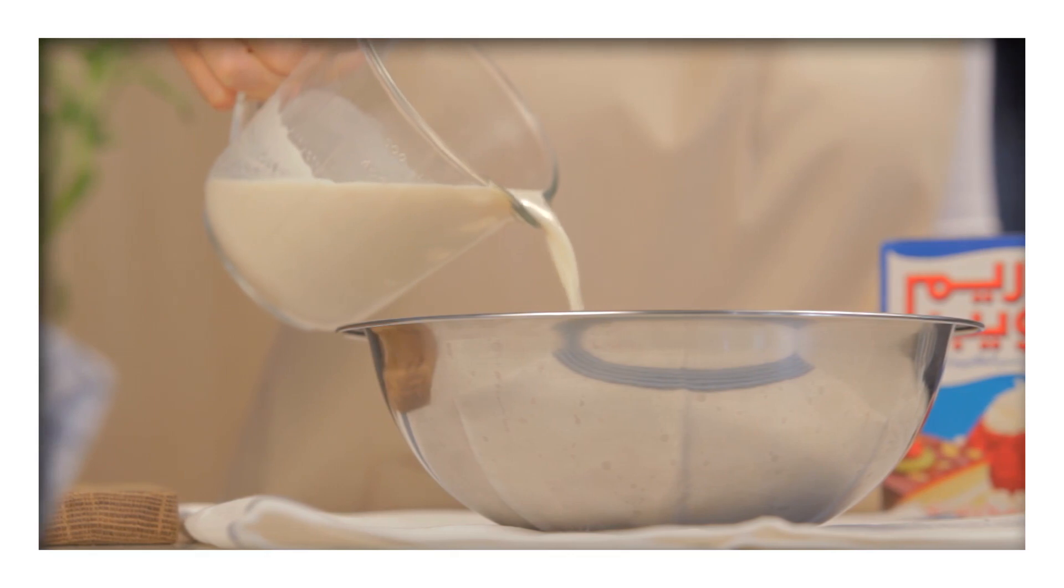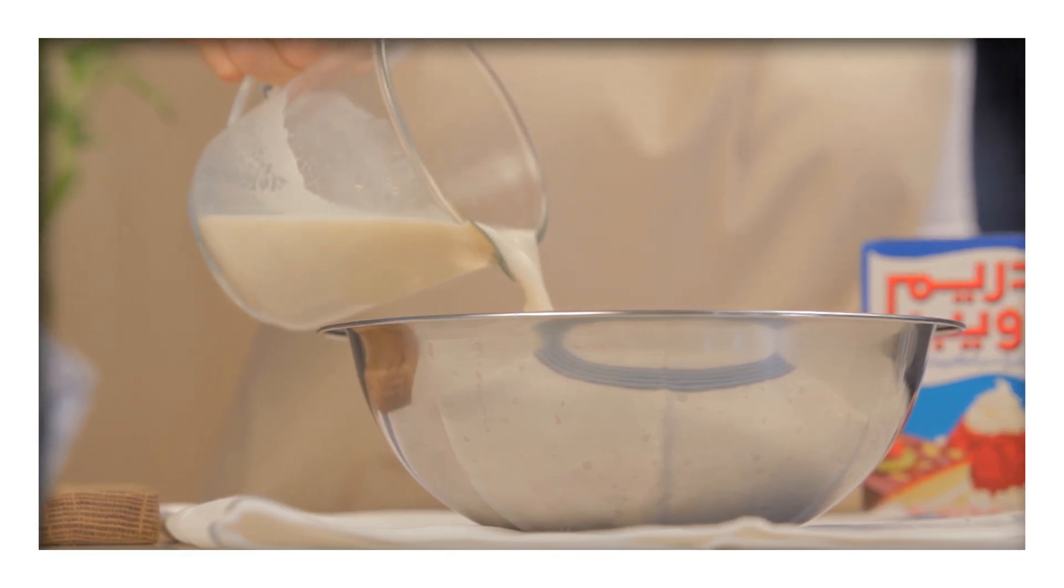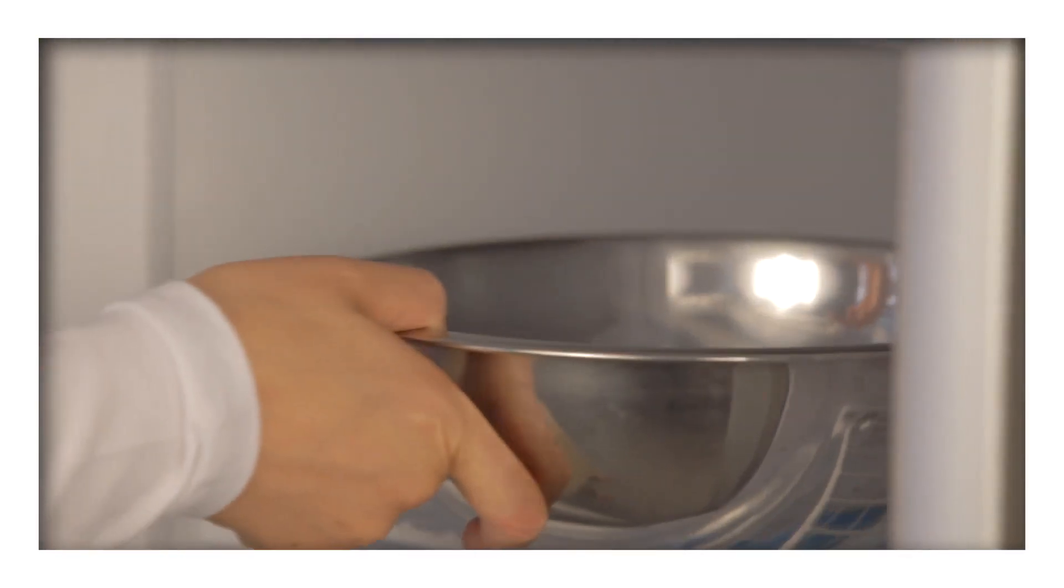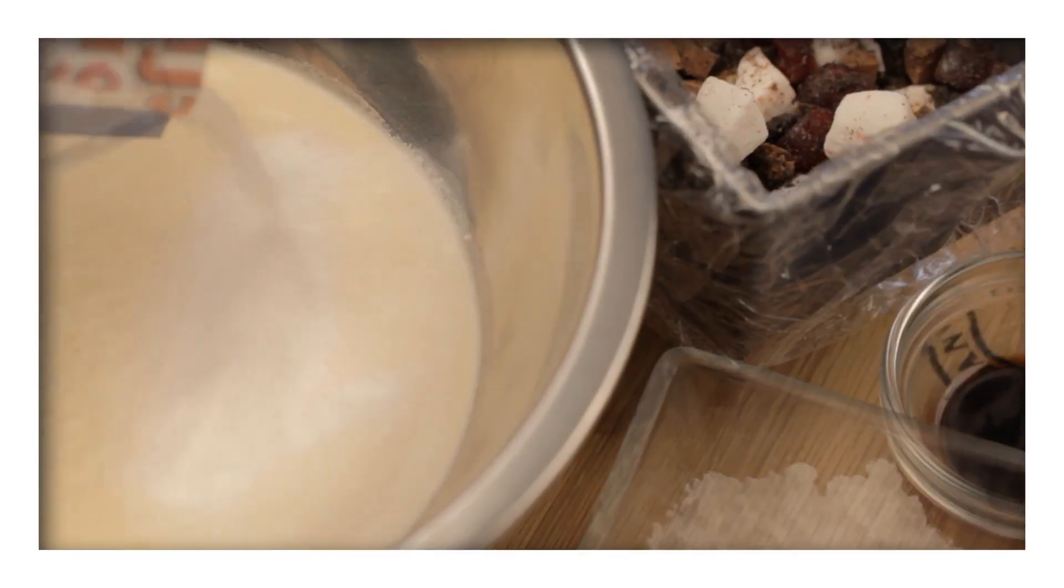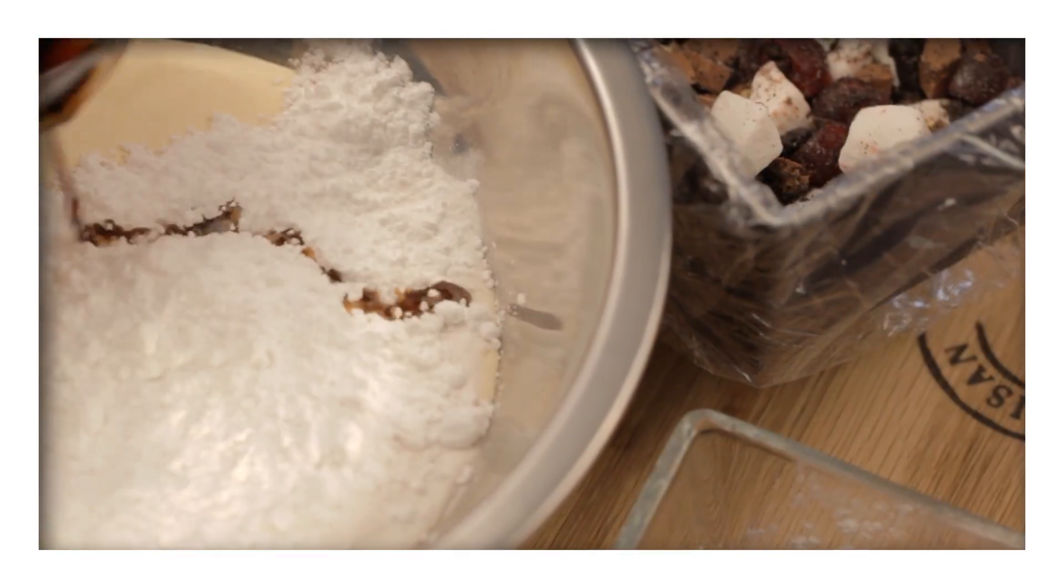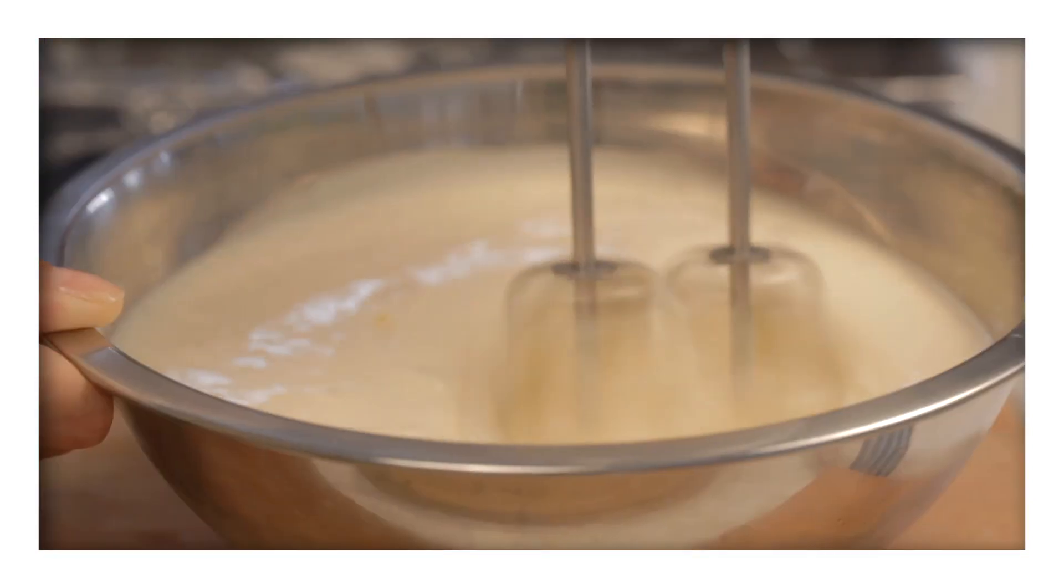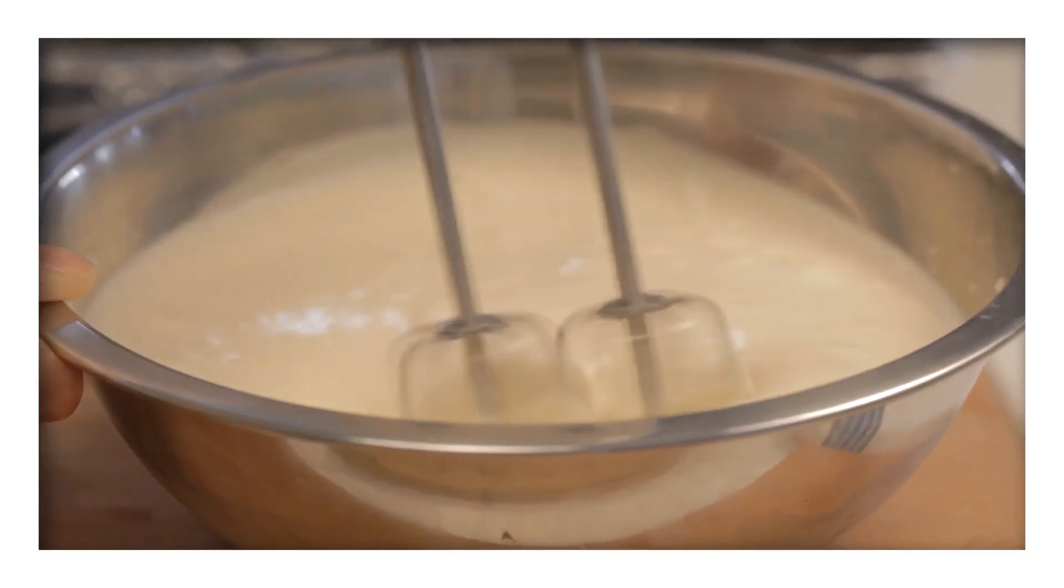Now pour the evaporated milk into a metal bowl before placing it into the freezer. When it has started to freeze, add the Dream Whip powder followed by the icing sugar and vanilla essence. Using an electric mixer, beat this for several minutes until it's thick and foamy.